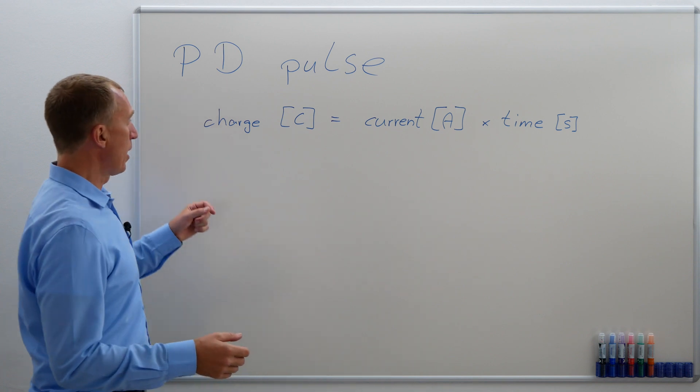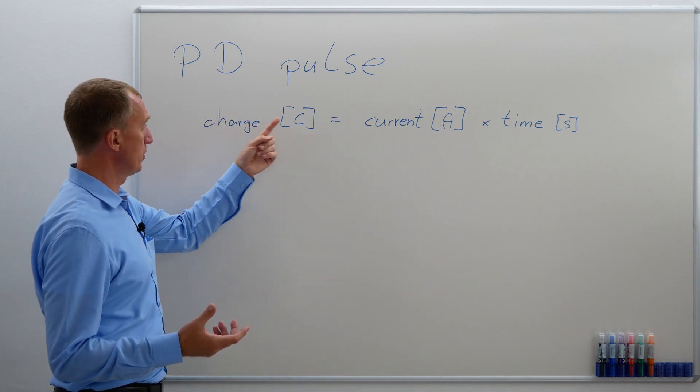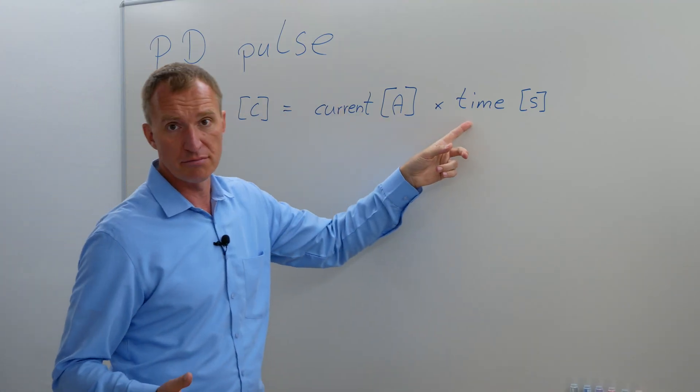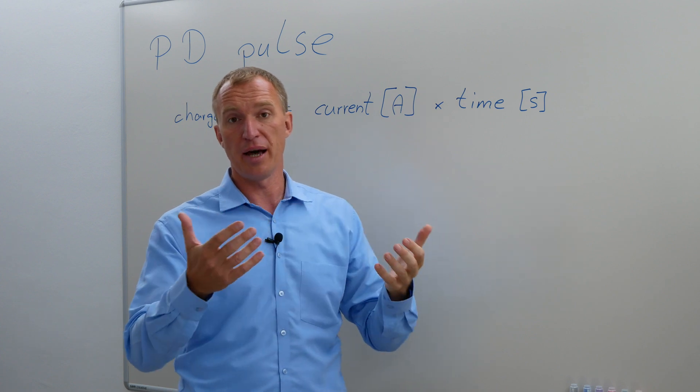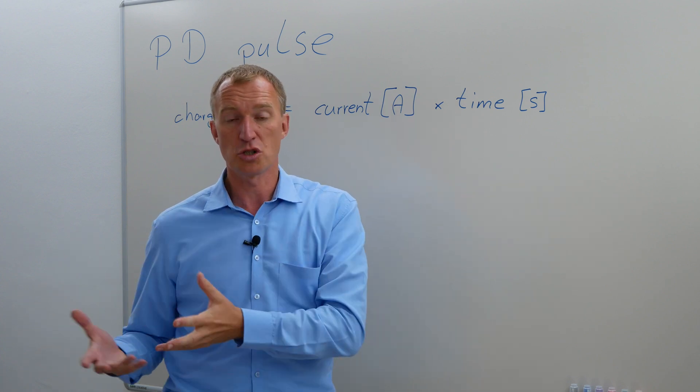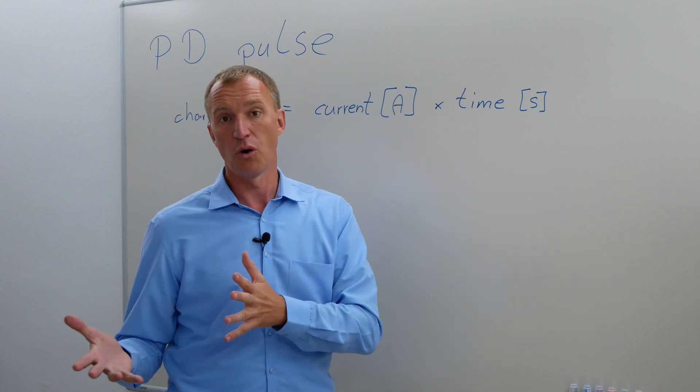So a partial discharge pulse is actually charge, and charge, the unit for charge is Coulomb, and charge is current times time. We know this, if we have a capacitor, we want to charge the capacitor, we need a current and a certain charging period. And if we want to have more charge, we need more current or more time.